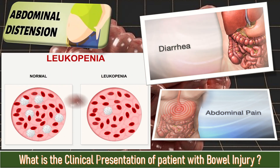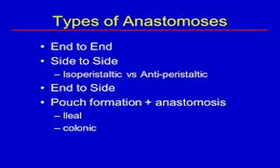The different types of bowel anastomosis include end-to-end anastomosis, side-to-side anastomosis, and end-to-side pouch formation plus anastomosis.